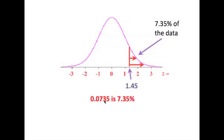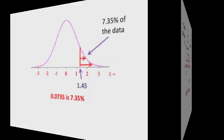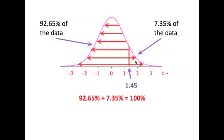If 0.0735% of the data lie to the right of a z of 1.45, we can say that 7.35% of the data lie to the right of that z-score of 1.45.